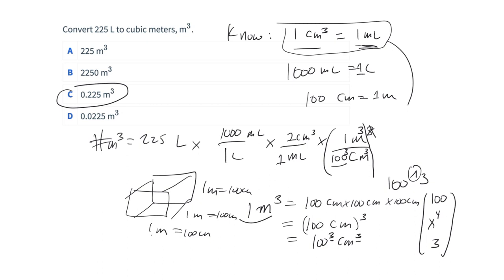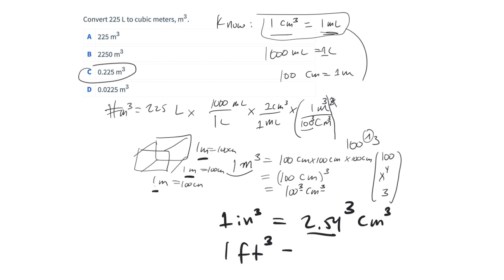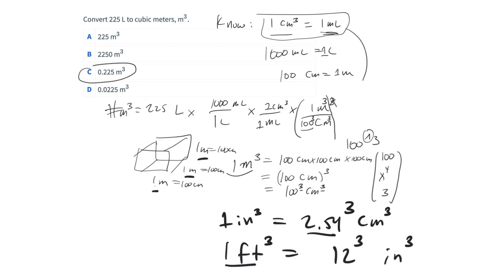There are a variety of cubic conversion factors you can use. If you need to convert cubic inches to cubic centimeters, use the inch-to-centimeter conversion of 2.54, then cube it: 1 inch by 1 inch by 1 inch equals 2.54 by 2.54 by 2.54 cubic centimeters. Or if converting cubic feet to cubic inches, there are 12 inches in a foot, so 12 cubed inches cubed in 1 cubic foot — 1 foot by 1 foot by 1 foot equals 12 by 12 by 12 inches.